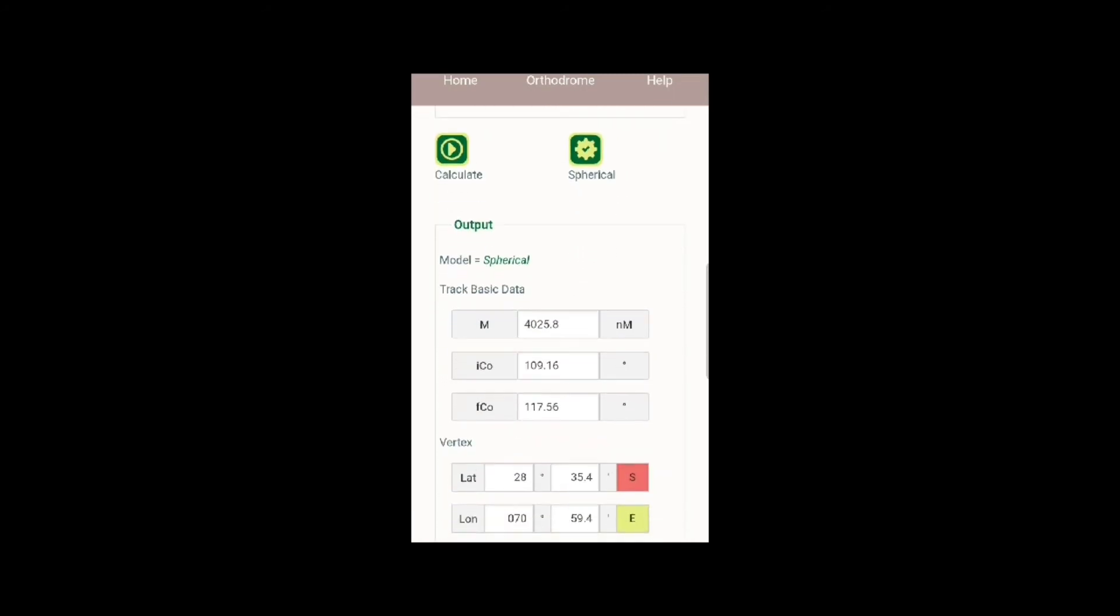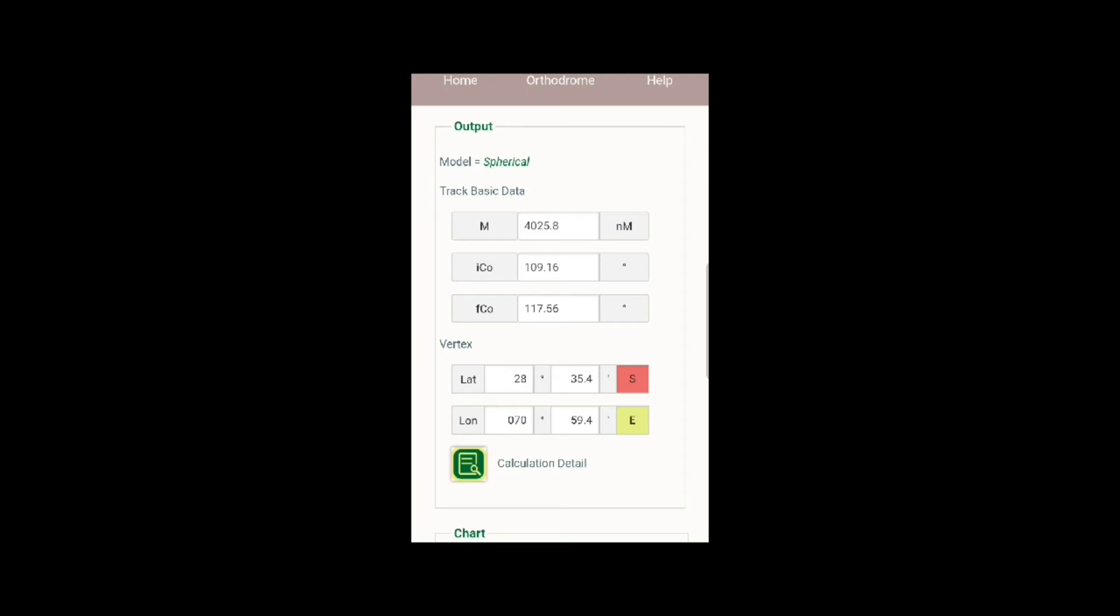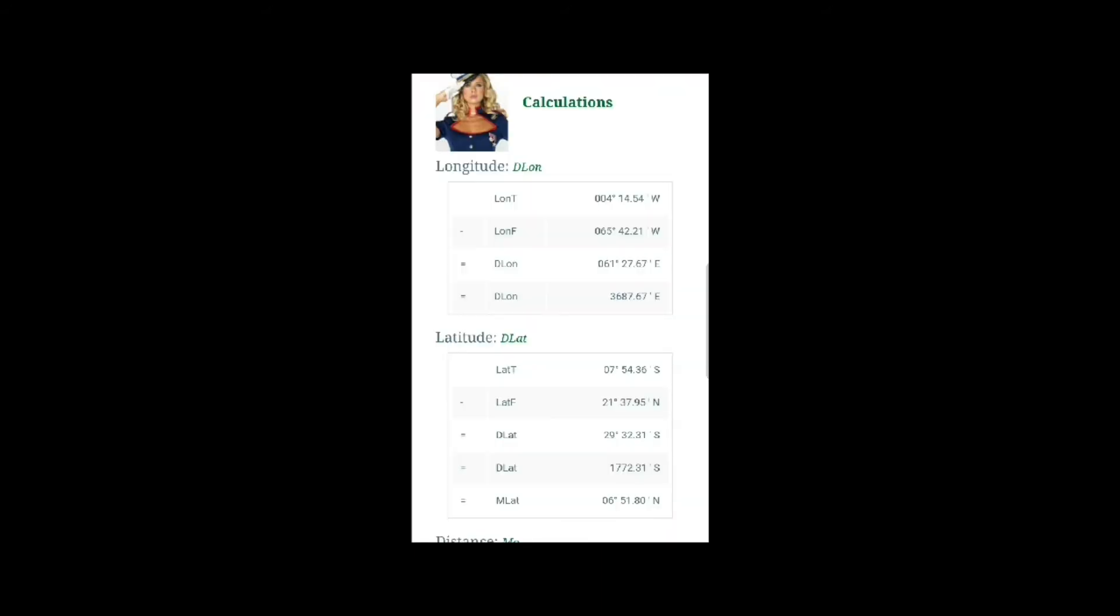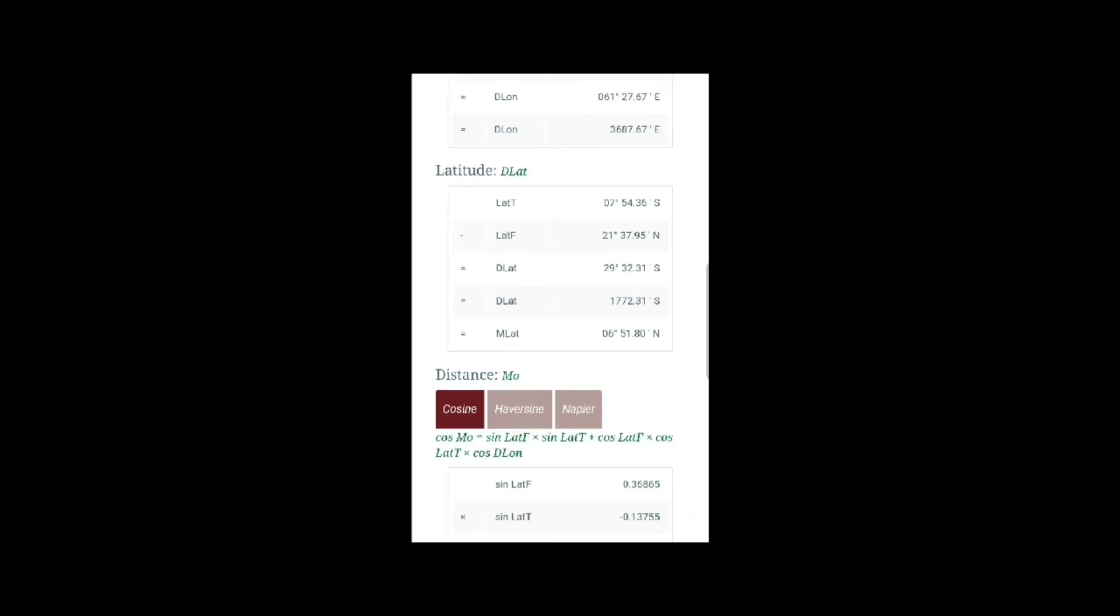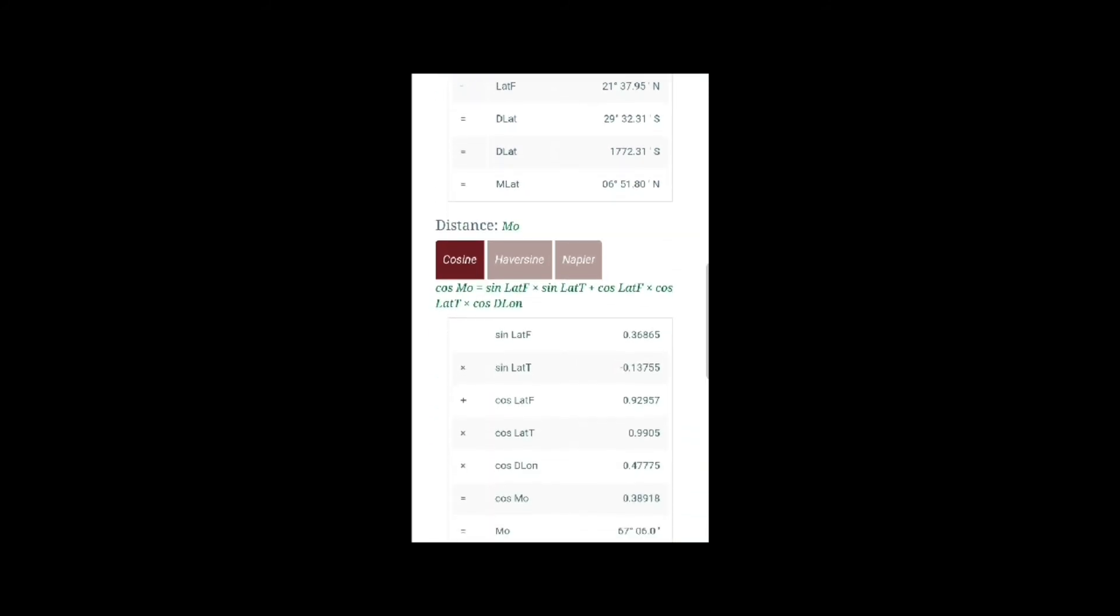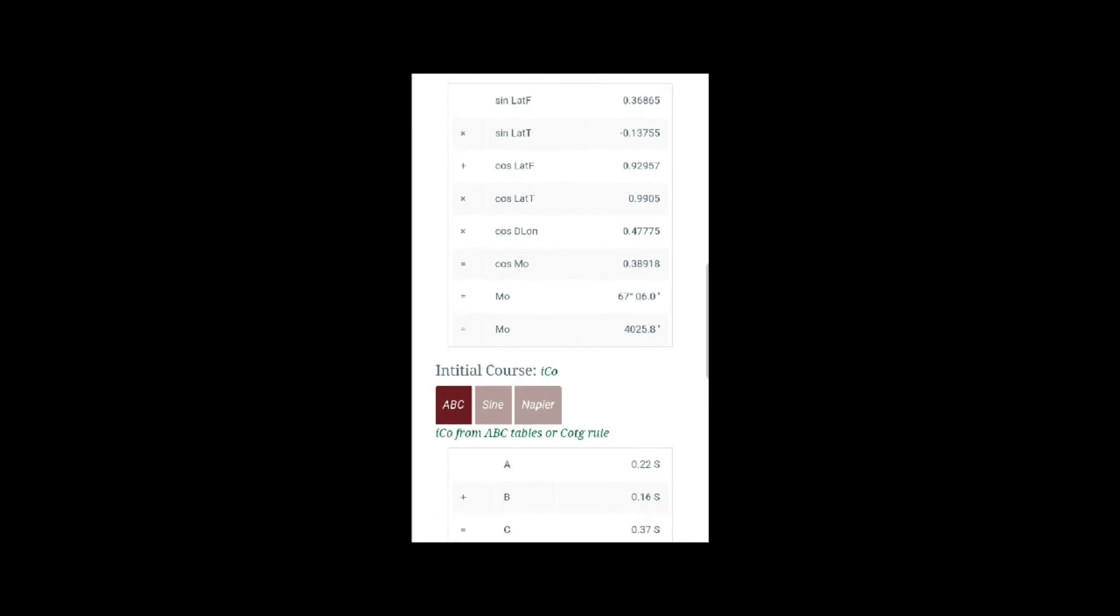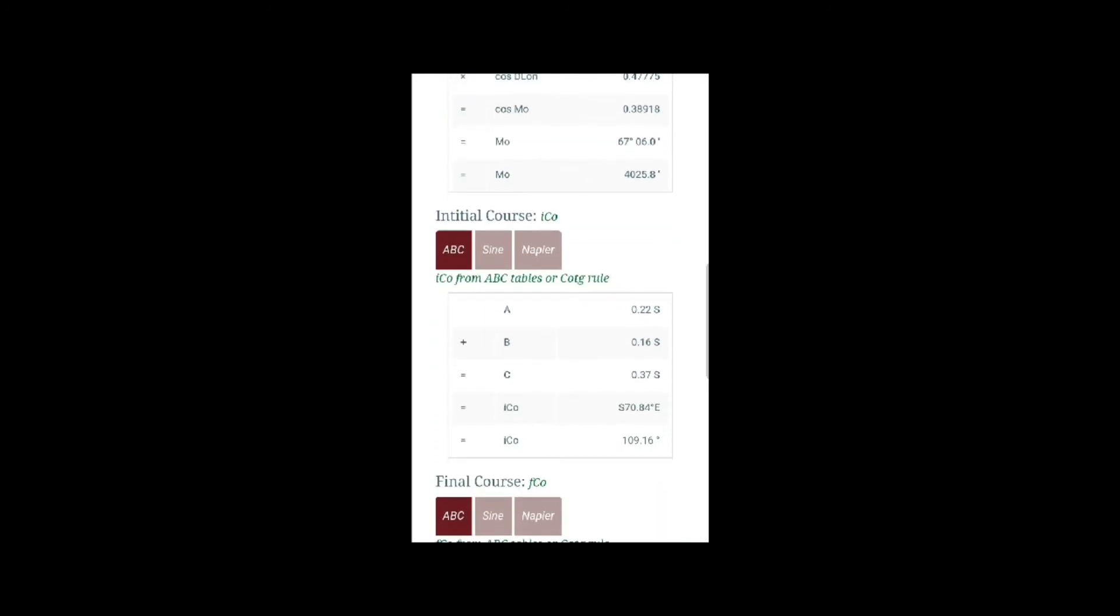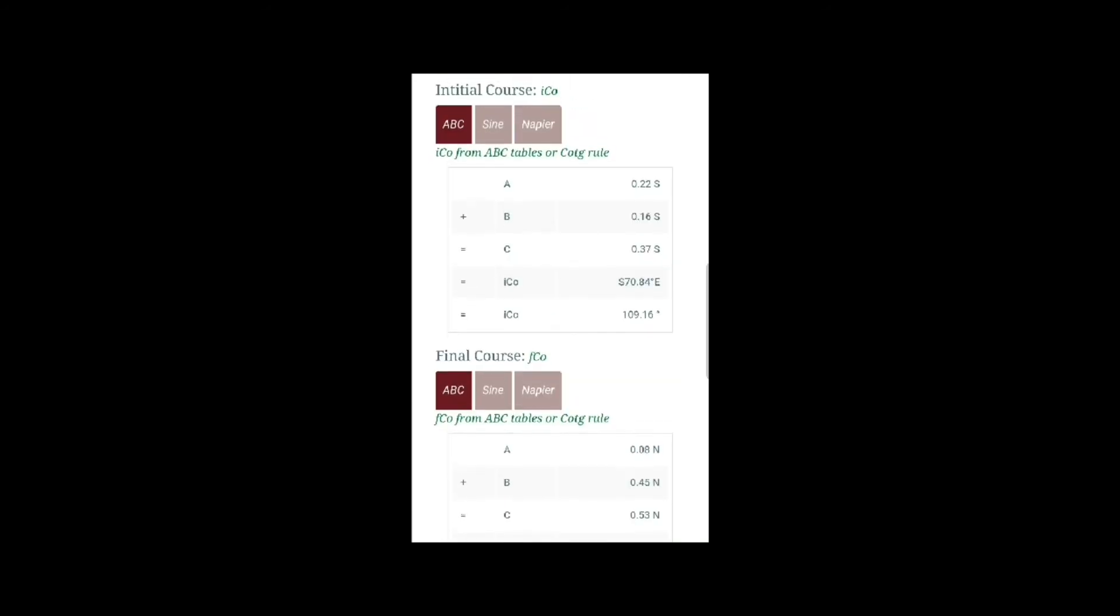It will show us the total distance, the initial course, and the latitude of vertex. To get full detail on how they answered this, we can click the calculation detail to get more info. Here they show how they get the D-long and D-lat. They also show the distance formula and total distance. Here we have the initial course and its formula, which is 109.16. That's it.